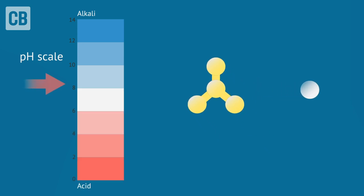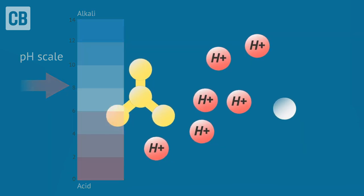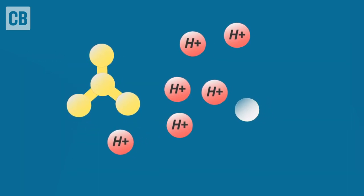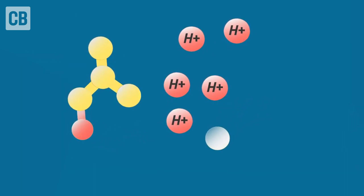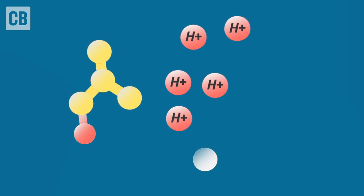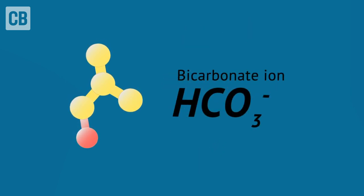Ocean acidification causes the amount of calcium carbonate in seawater to fall. This is because some of the carbonate ions that normally pair with calcium to form calcium carbonate, instead pair with hydrogen to form bicarbonate.